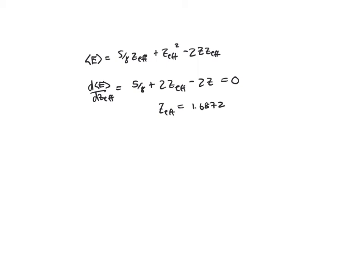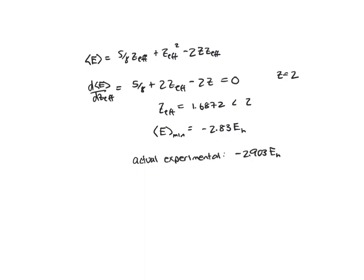Z_effective is less than two, as expected, because Z for helium is equal to two. Our Z_effective is less than two because each electron feels a nuclear charge that's less than the full nuclear charge. This gives me my minimum energy expectation value. Plugging that Z_effective back into the expectation value, I get that this is equal to minus 2.83 Hartrees. Looking at the actual experimental value obtained from spectroscopic measurements, I find that it's minus 2.903 Hartrees. So we can see that this variational method gives us a pretty good approximation of the ground state energy of the helium atom.